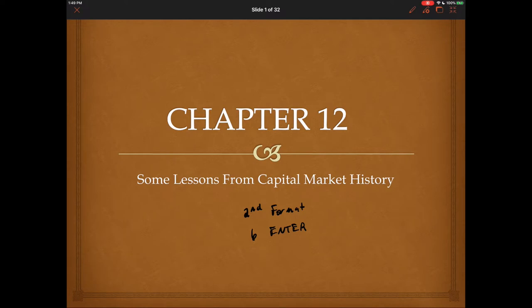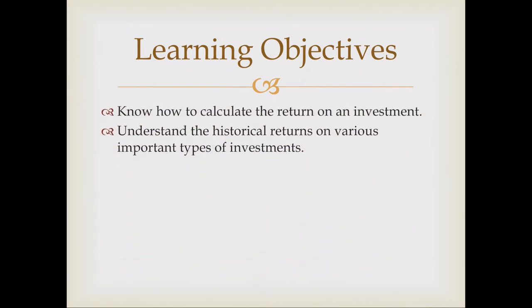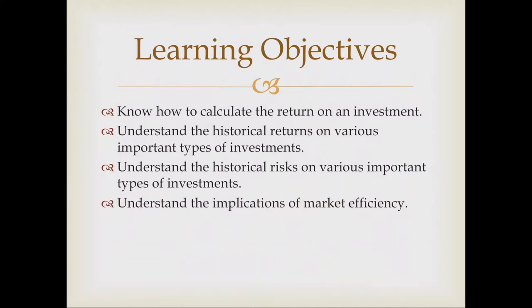Additionally, as you go through the e-book for this chapter be sure to evaluate the tables that are presented for the year-over-year returns, as you will have some questions that go over these tables. Our learning objectives for chapter 12 are: know how to calculate the return on an investment, understand the historical returns on various important types of investments, understand the historical risks on various important types of investments, and understand the implications of market efficiency.